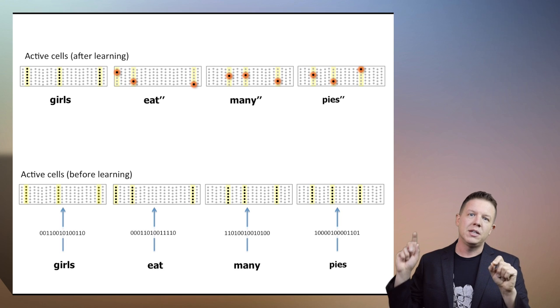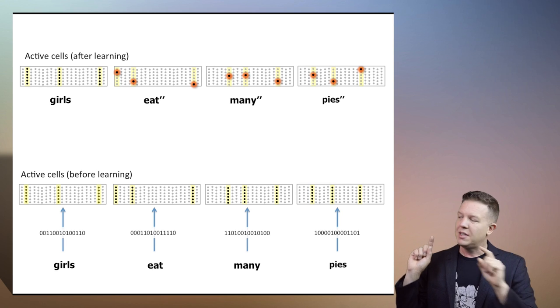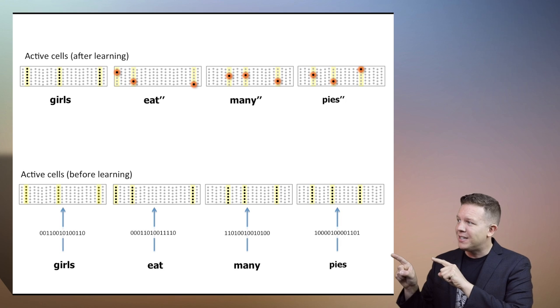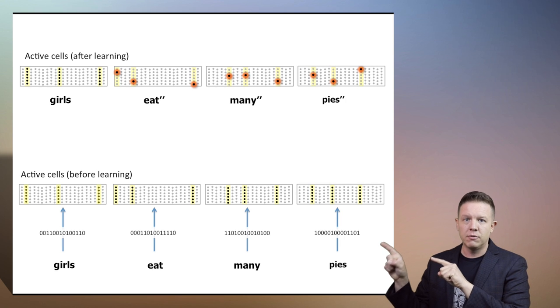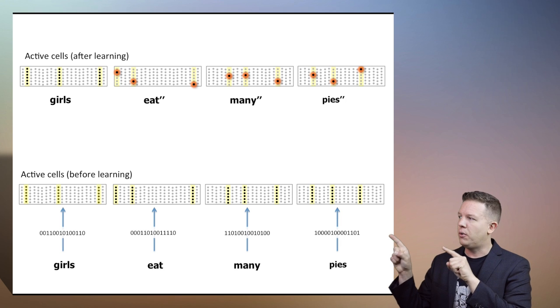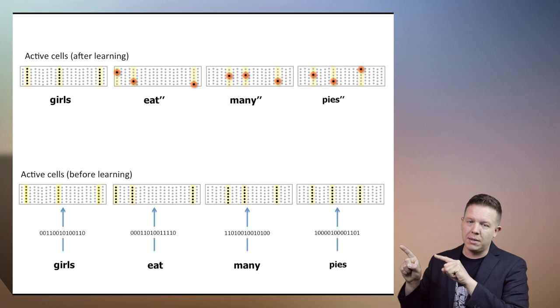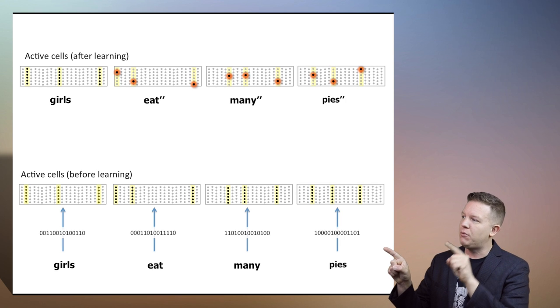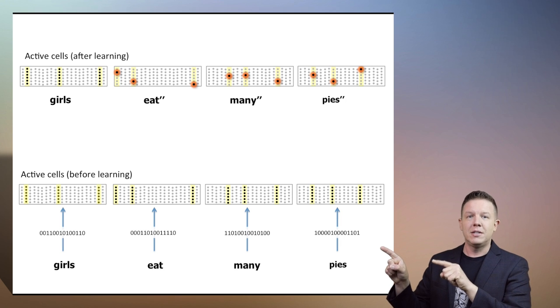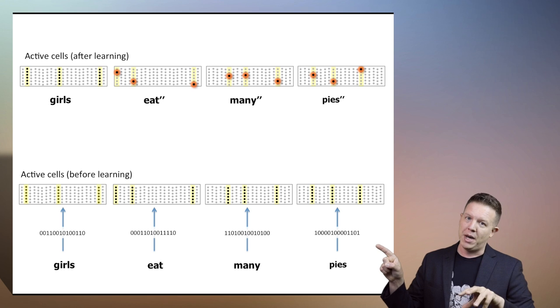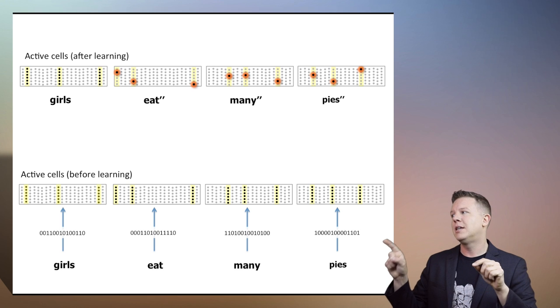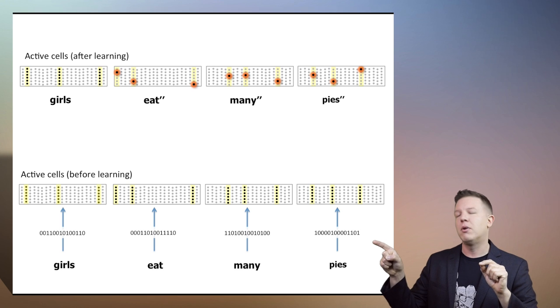That eat was within the context of boys. This eat is within the context of girls. So hence 'eat double prime.' Same thing with many — this is now the spatial pattern many within the context of eat double prime,